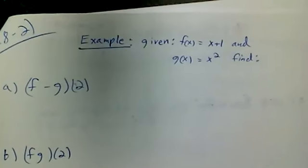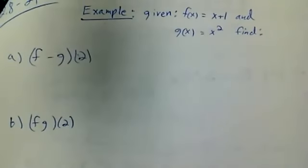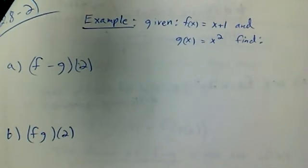Okay guys, 2.8 second video. So let's start with an example. Given f(x) equals x plus 1 and g(x) equals x squared, find the following.